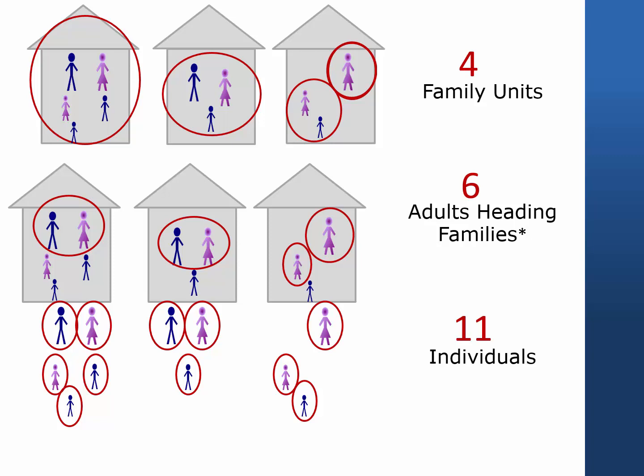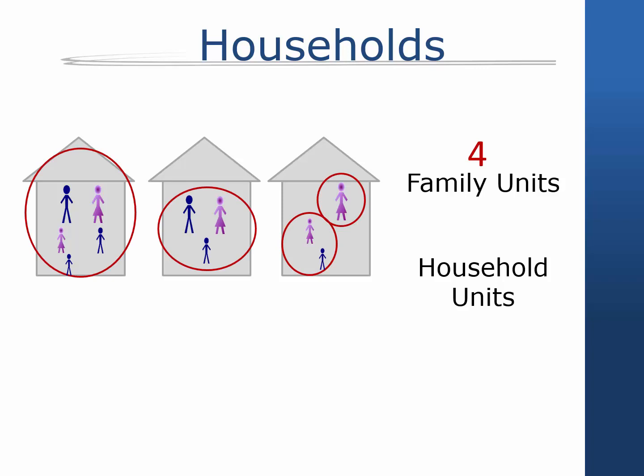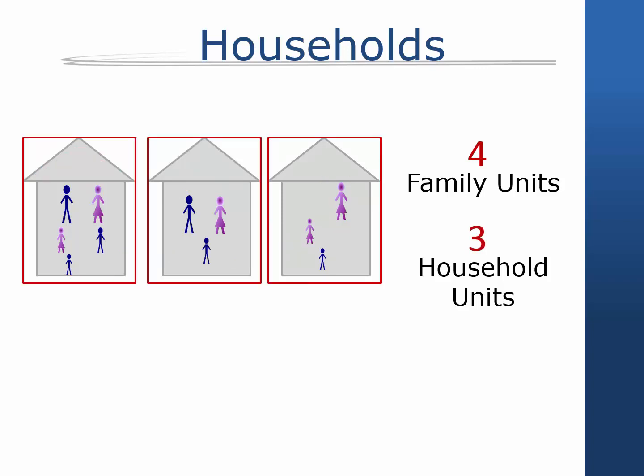We mention two examples here. Although the PSID files are organized at the family and individual levels, a study can also be used to analyze households. In our previous example, 4 family units resided in 3 household units. Users who wish to analyze households may aggregate family units to the household level using the household ID number, available in every wave.